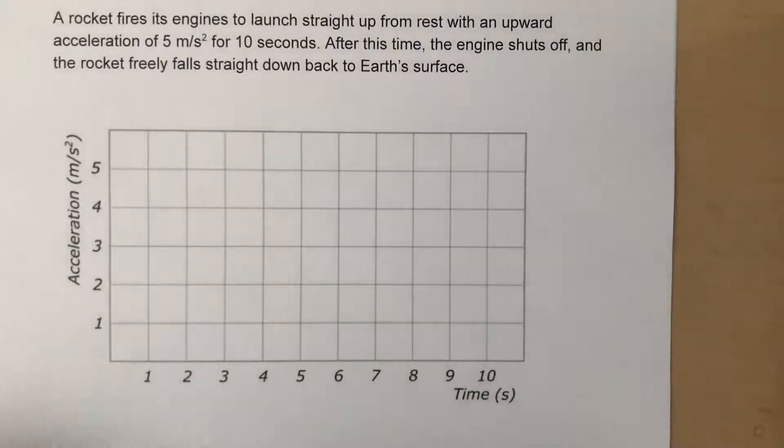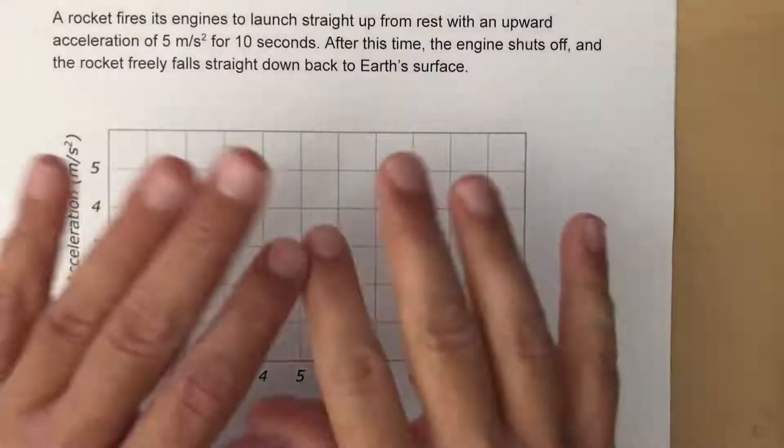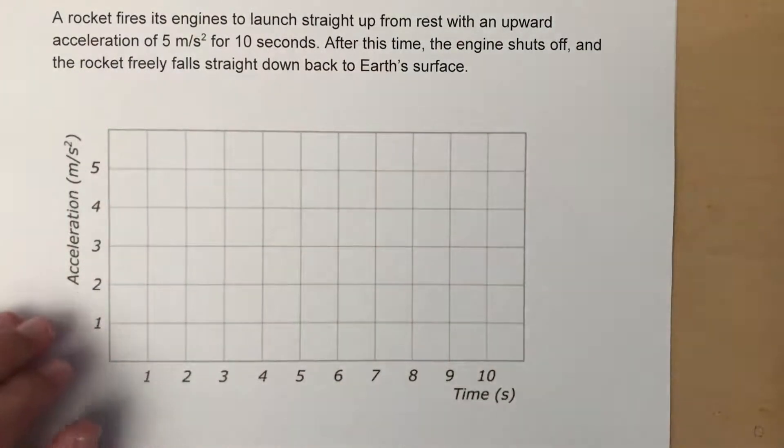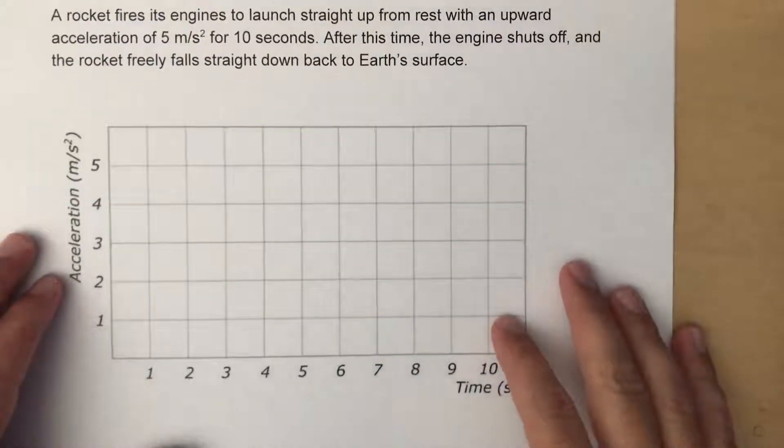This is workbook 1J which is vertical motion. Remember there's nothing different about vertical motion at all. It's exactly the same as horizontal. All the rules are the same.